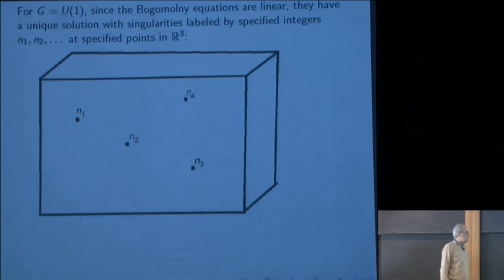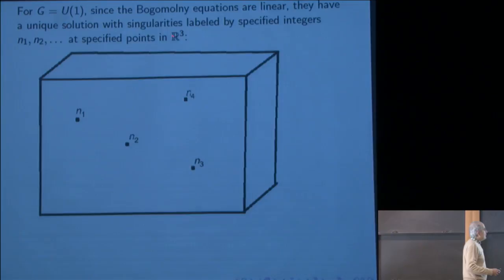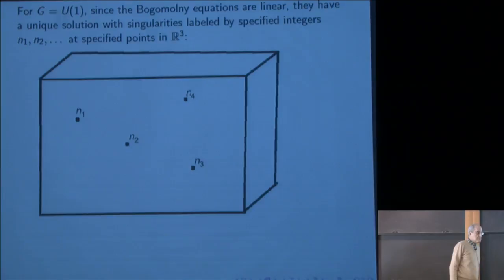If G is U(1), since the Bogomolny equations are linear, they have a unique solution with singularities labeled by specified integers at specified points in R^3 — literally just a linear combination of the basic solution. I want to assume that the sum of the n's is 0, which ensures that the given solution vanishes at infinity faster than 1/|x|. I'll explain in a moment why I want that condition.